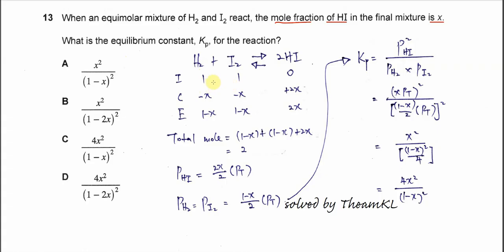After we start from one mole each, of course HI is 0. Then for the change, there are two choices X and 2X. I suggest you all to start with X. Then let's try it out.